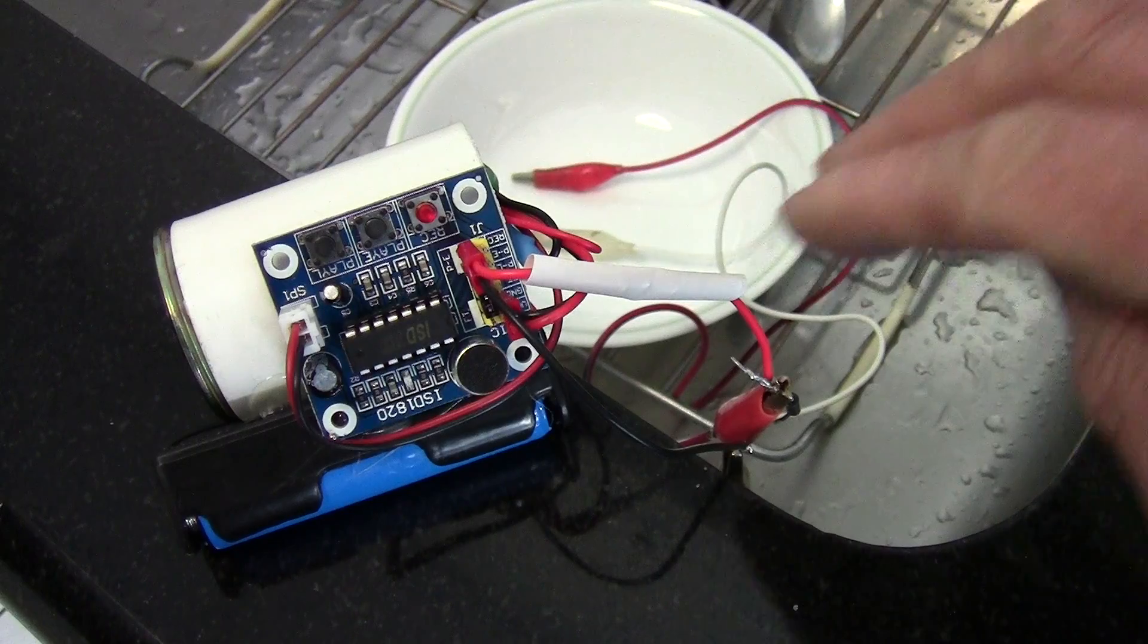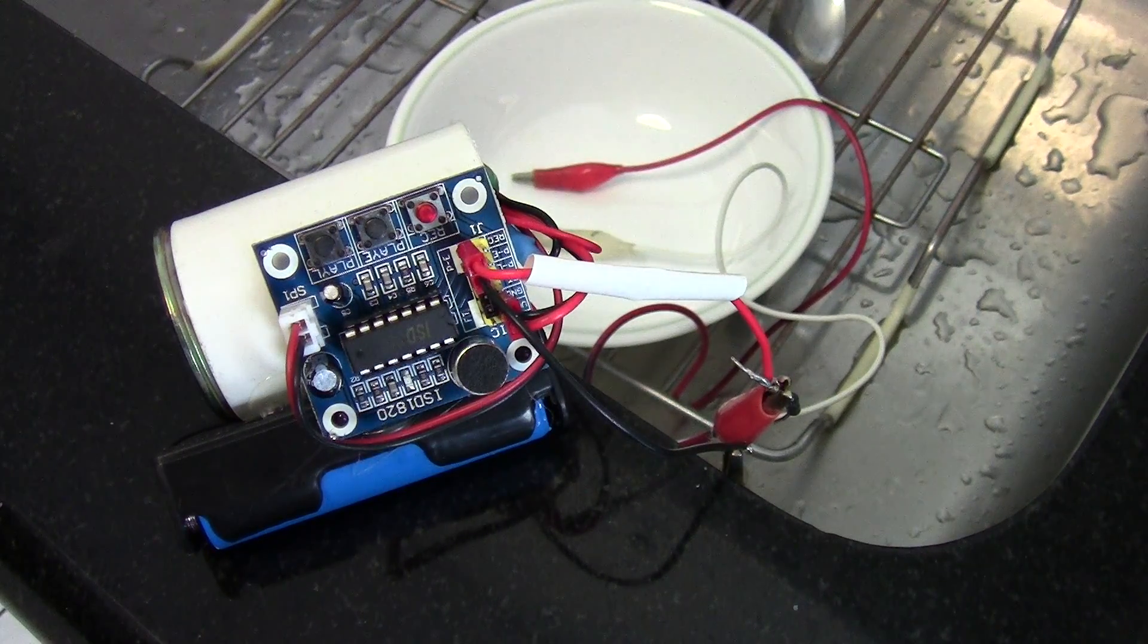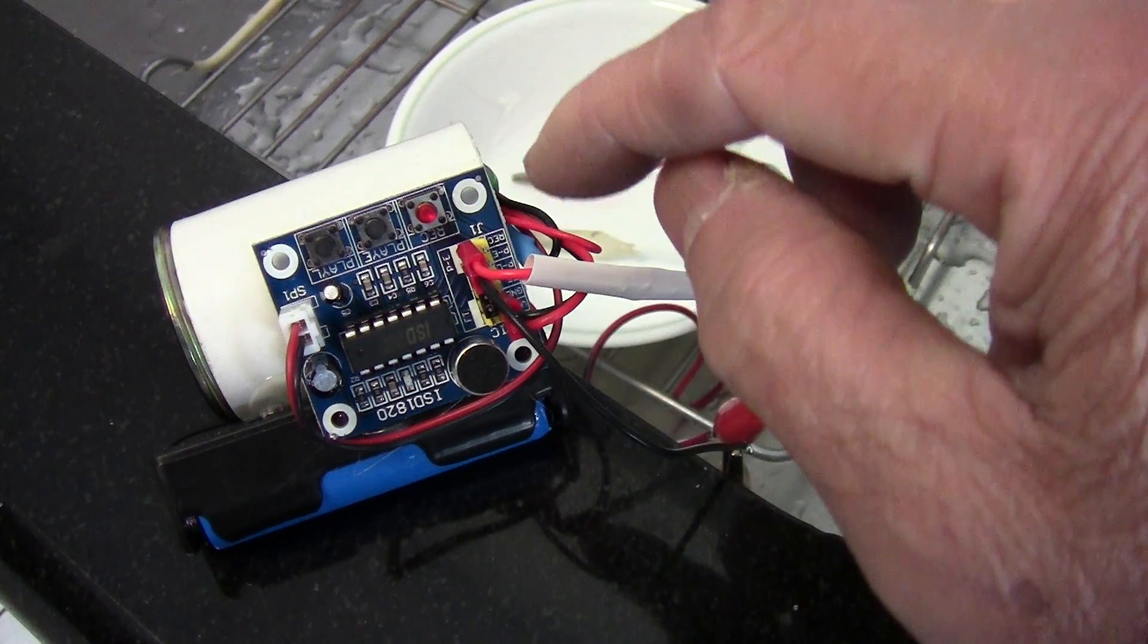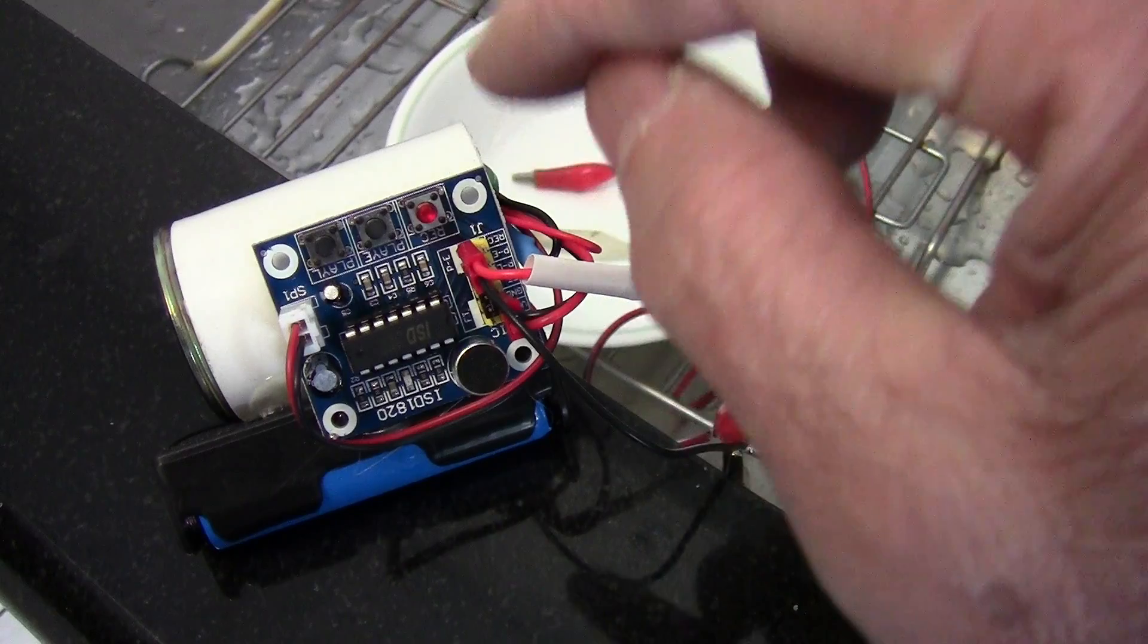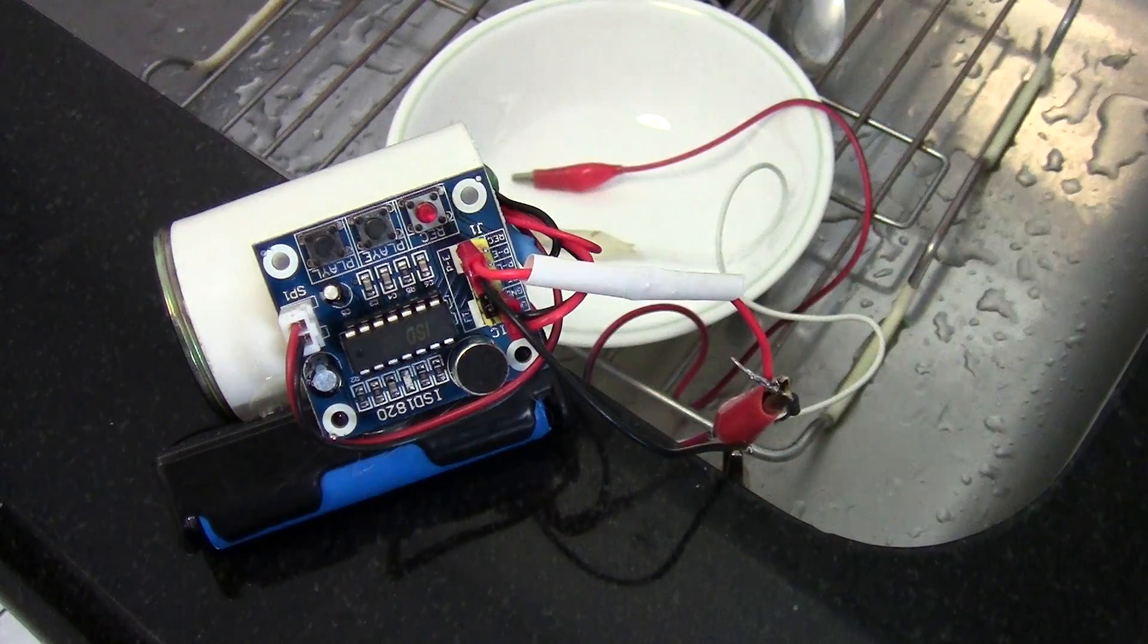You just have to attach a couple of test leads or wires to where you want to detect water, and you put the jumper in the loop function and record a message.